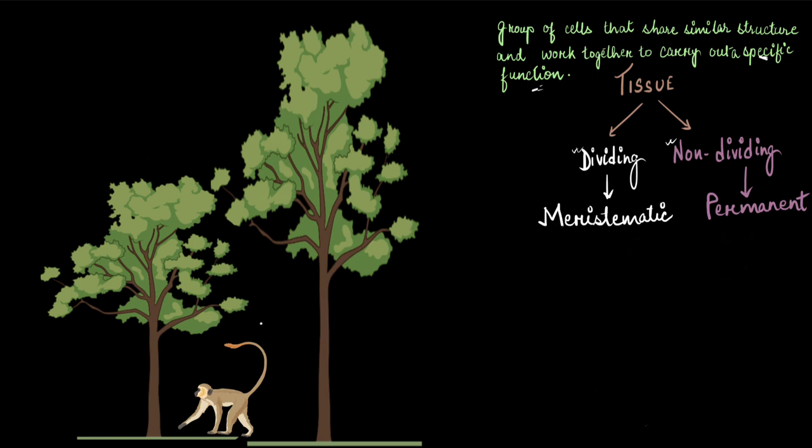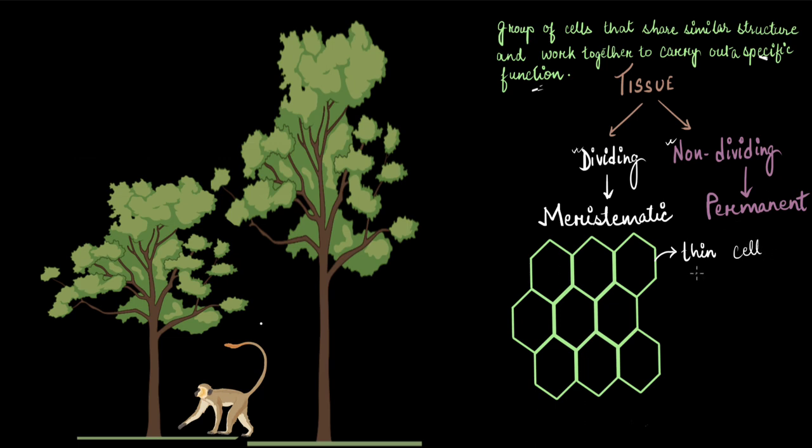Let us begin with the cells that make up meristematic tissue. Here are a few cells stuck together forming a tissue. Since these cells have the property to actively divide, they also have special characteristics. The first is that they have very thin cell walls which help them to rapidly divide.